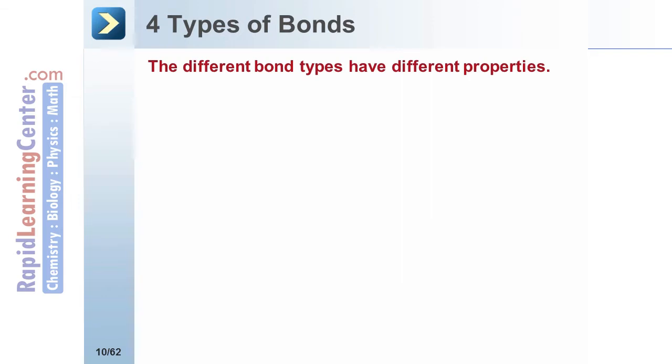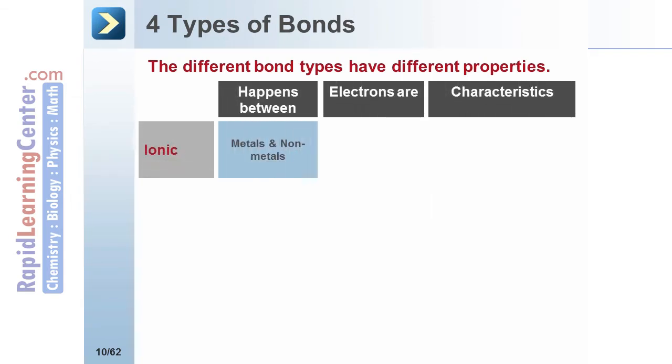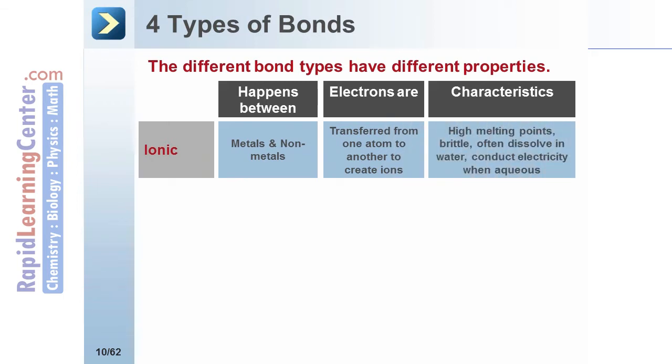The different types of bonds have different properties depending on what the electrons are doing. Ionic compounds are formed when a metal transfers an electron to a non-metal. This results in high melting points, brittle compounds that often dissolve in water, and compounds that conduct electricity when dissolved in water.